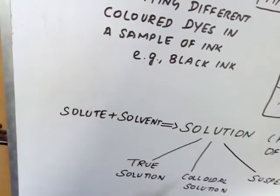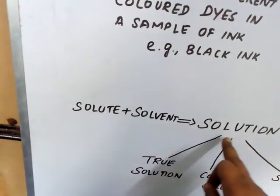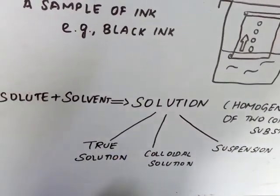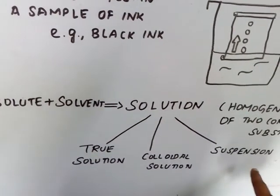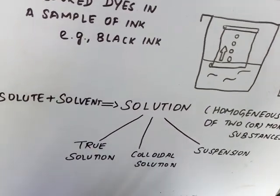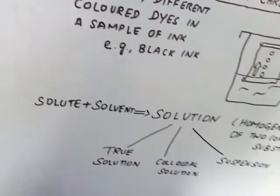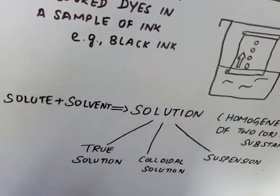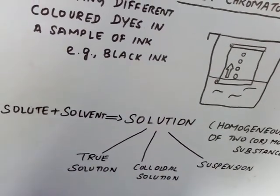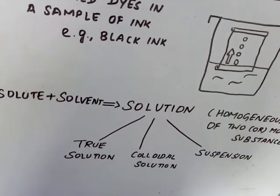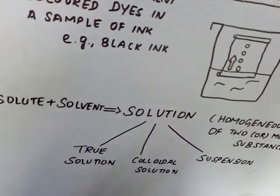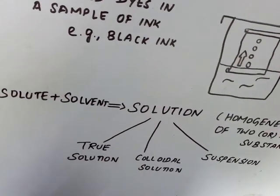Based on the particle size, the solution is classified into three types: true solution, colloidal solution, and suspension. When we are taking true solution, for example, I said salt water, no? In that salt water, after you are mixing salt with water, is it possible for you to separate that salt again? No, because it is completely dissolved. So the size of the particle is less.